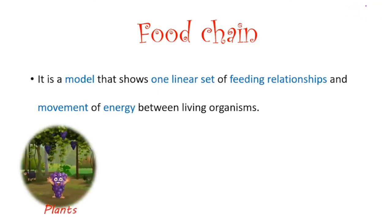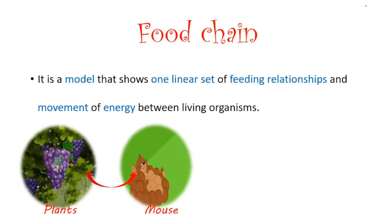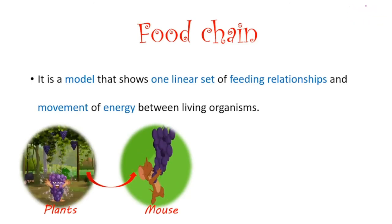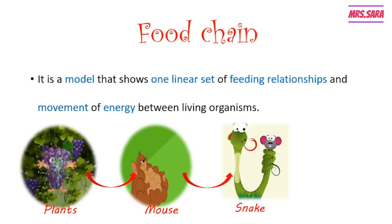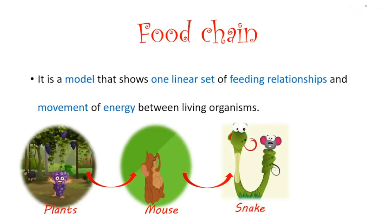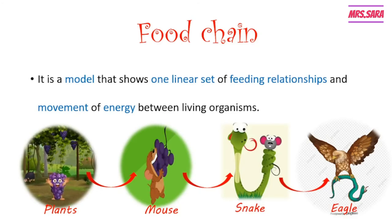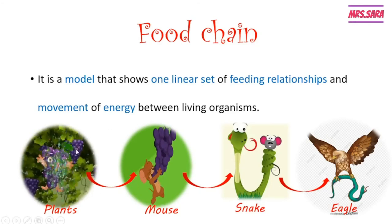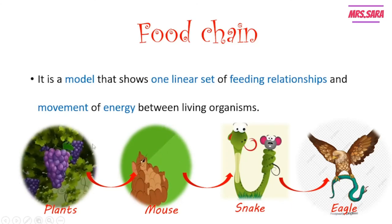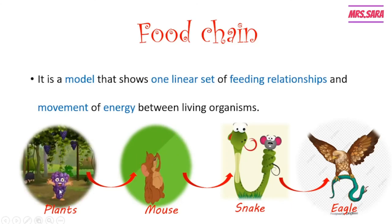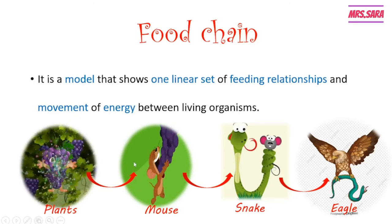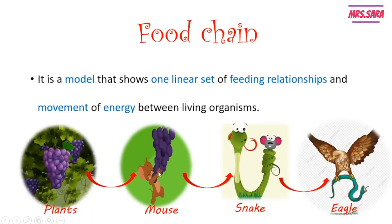Here is an example: grapes are plants, so the mouse eats the grapes. Then the snake eats the mouse, and the eagle eats the snake. So the grape is the producer; the mouse feeds on the grape, making the mouse a primary consumer.